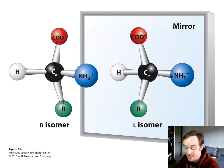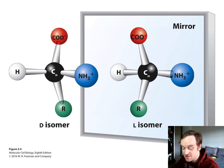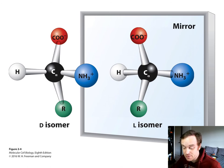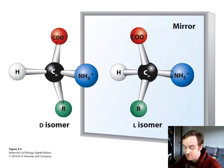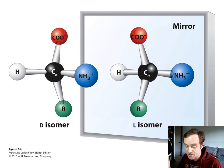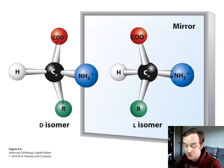If you've taken organic chemistry, you've probably had stereoisomers beaten into your head. The tetrahedral binding geometry of a carbon bound to four dissimilar atoms is asymmetrical and can be arranged in three-dimensional space in two different ways, producing molecules that are mirror images of one another — kind of like your left and right hands. They are in two different stereo conformations.